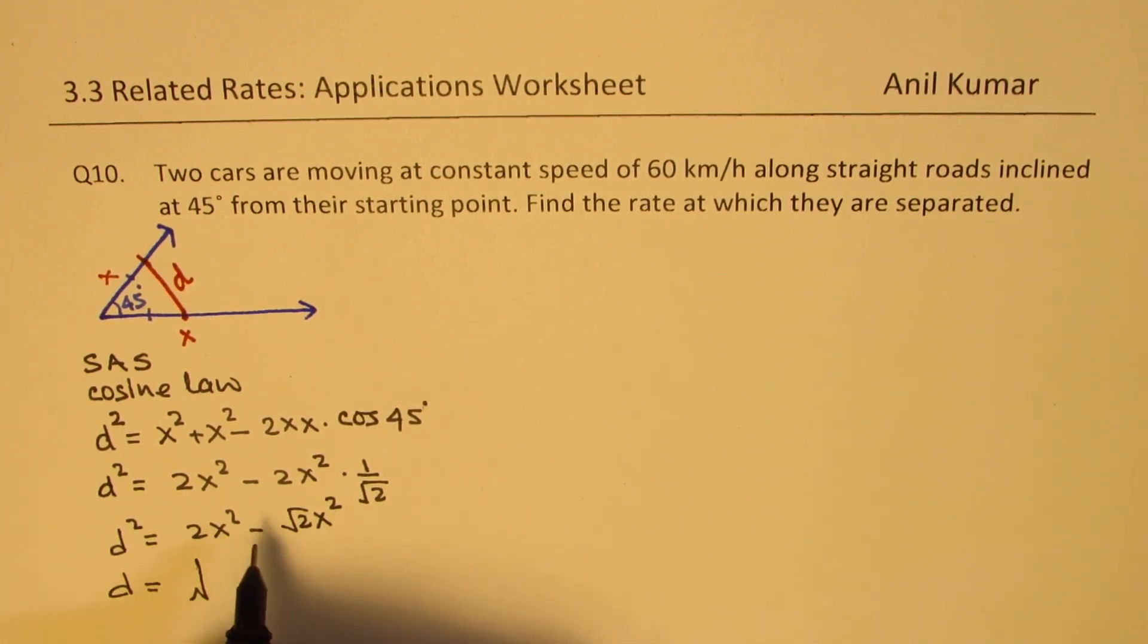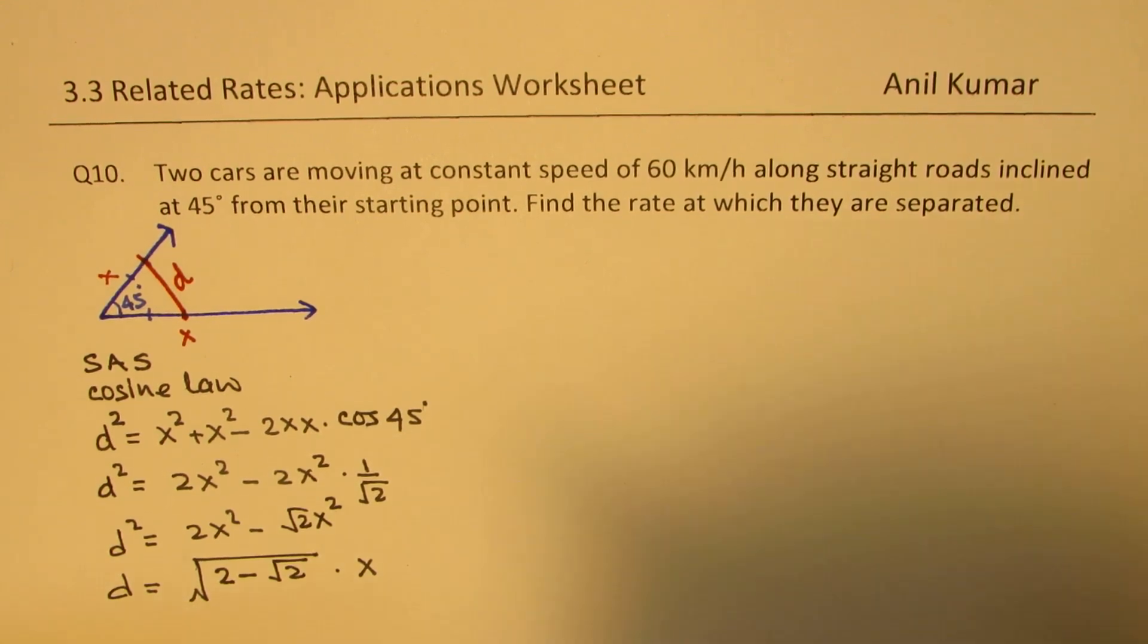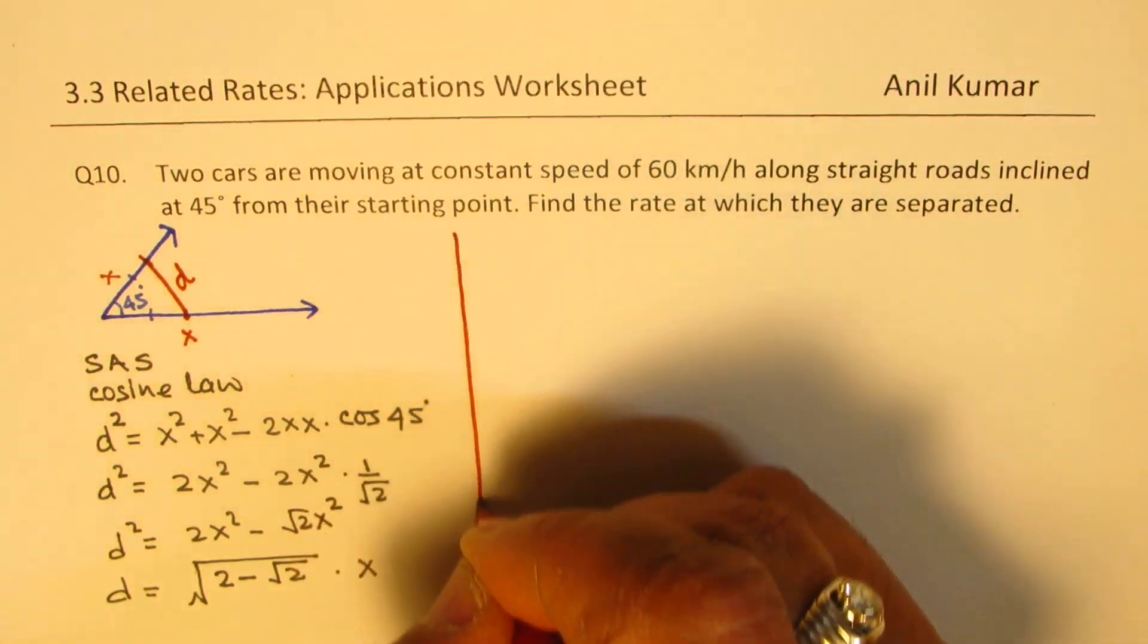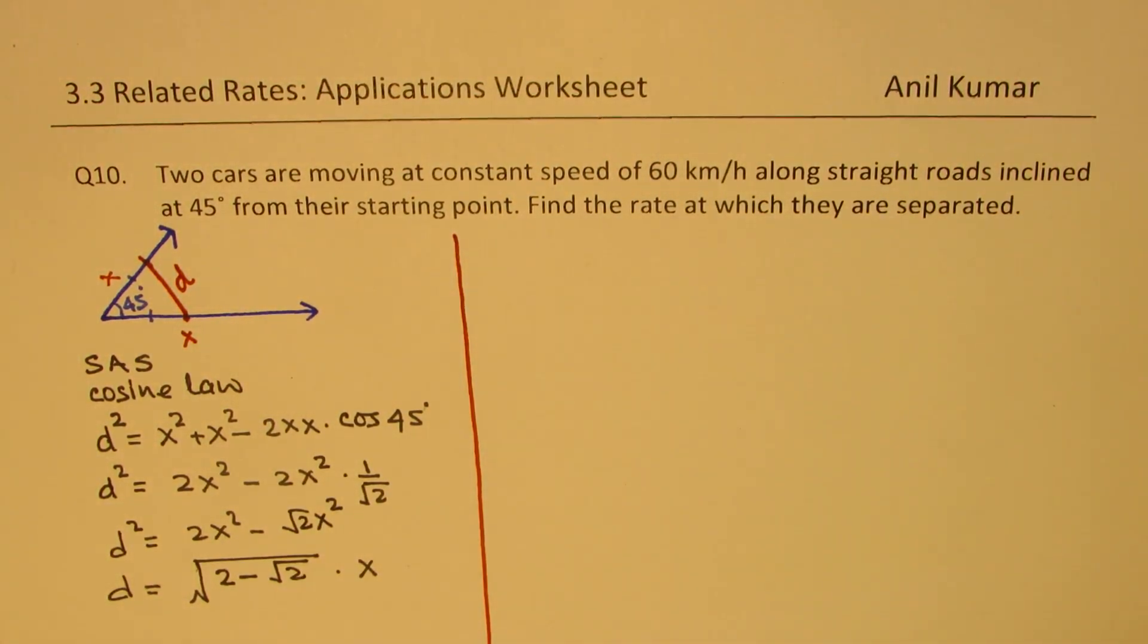So x square is common. So we can write this as two minus square root of two x square, square root is x. Is that clear to you? So that is how D is related, the separation between the cars is related with distance they have moved.